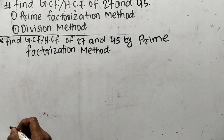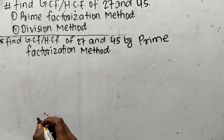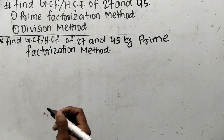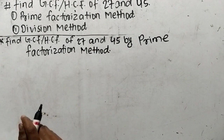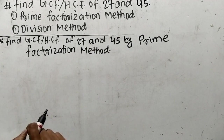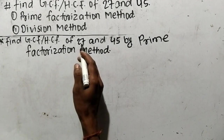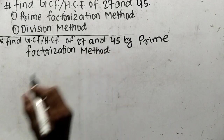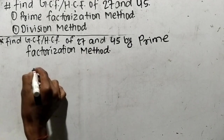While finding out GCF or HCF by prime factorization method, first we have to find out the prime factors of the given numbers. So here the numbers are 27 and 45.